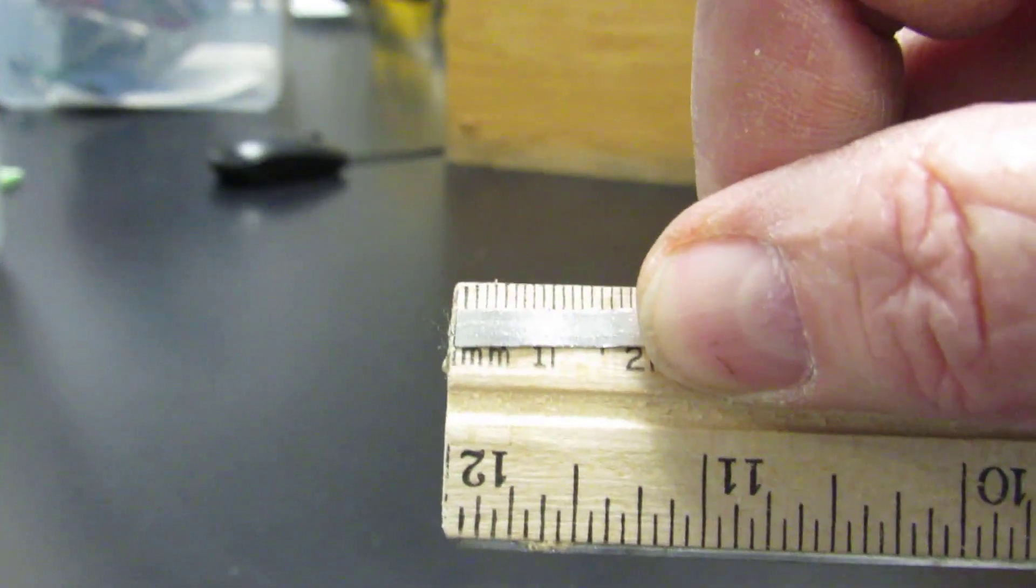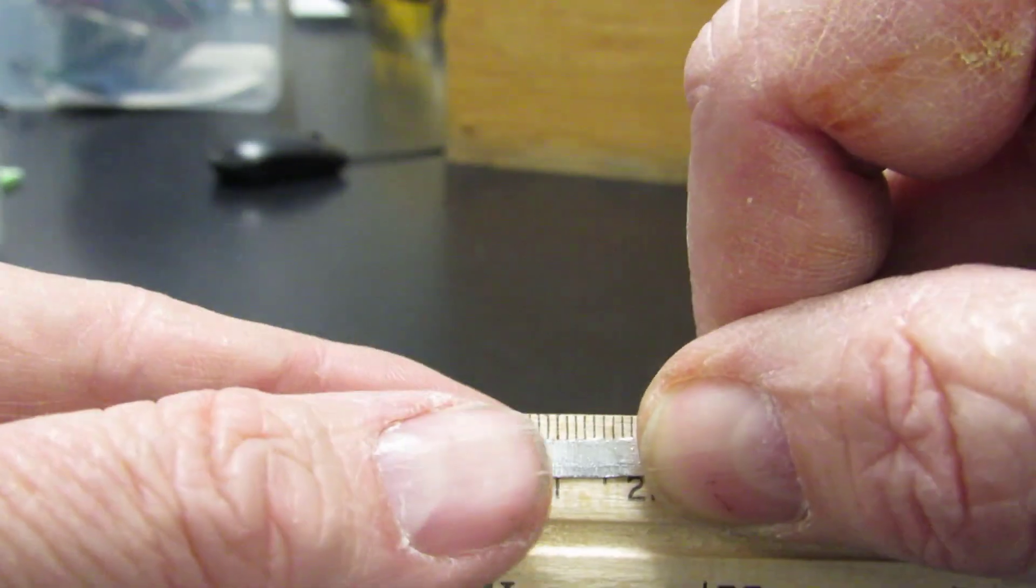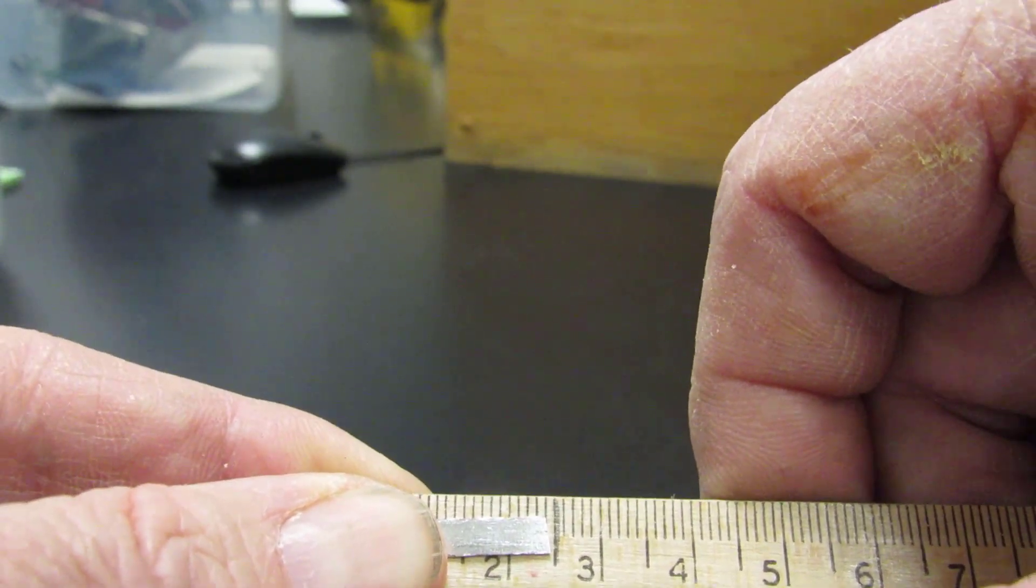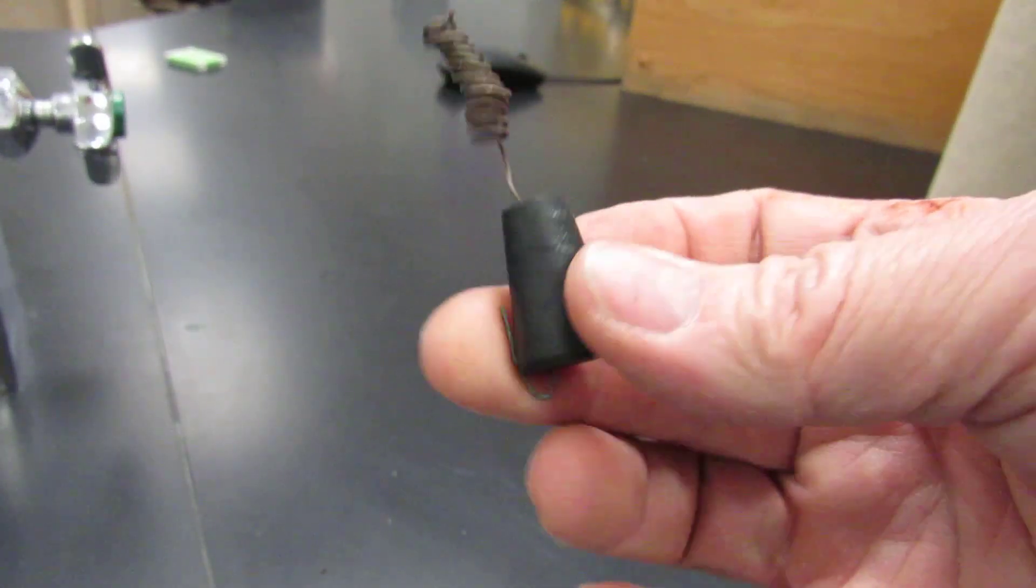Now you need to measure the magnesium. Use your ruler to measure the magnesium and find out how long it is. It looks like that one's about 2.4 something, 2.45 maybe.